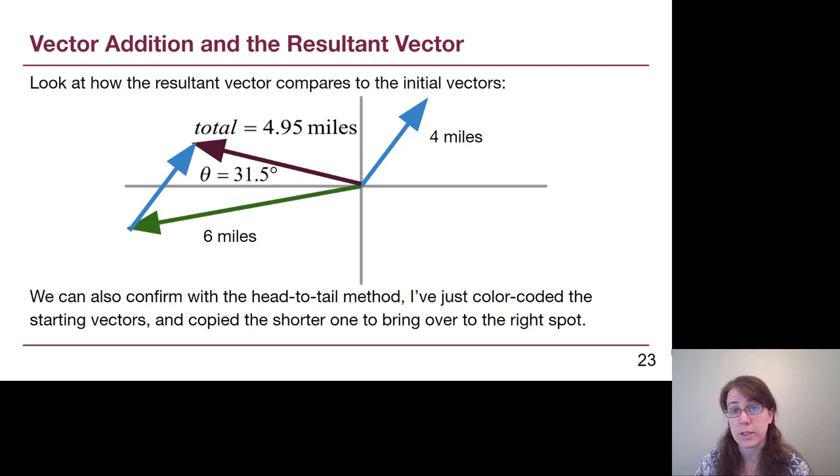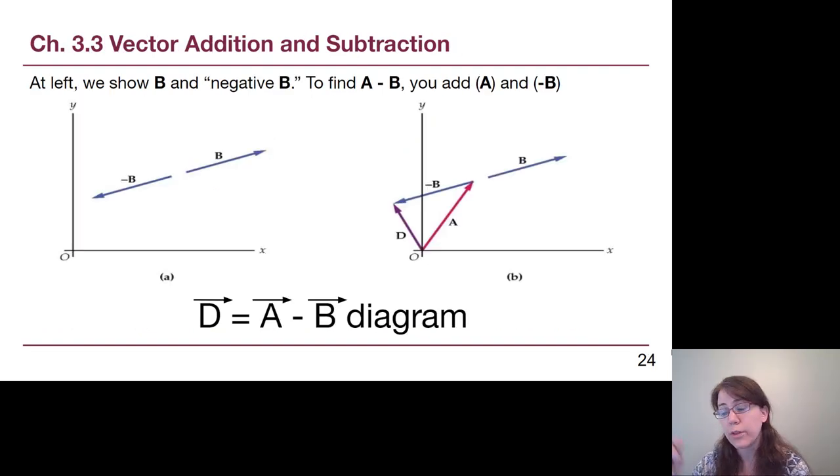If we look at how the resultant vector compares to the initial vectors, we see that the head-to-tail method from the textbook does actually work. But we also hopefully recognize that there is no possible way to draw this and actually get three digits of precision on our answer if we're just using the graphical method. It's a possibly useful check for us to make sure it makes sense, but it is not the actual quantitative method that we're going to be working through.